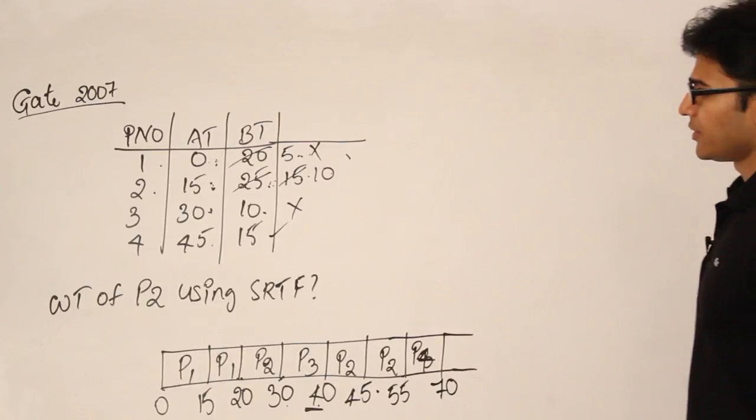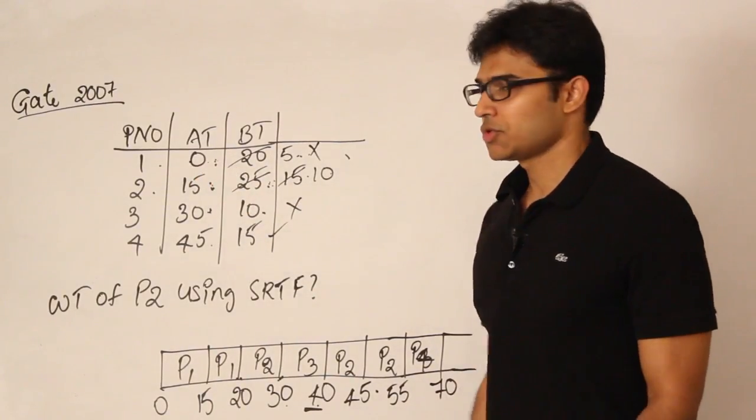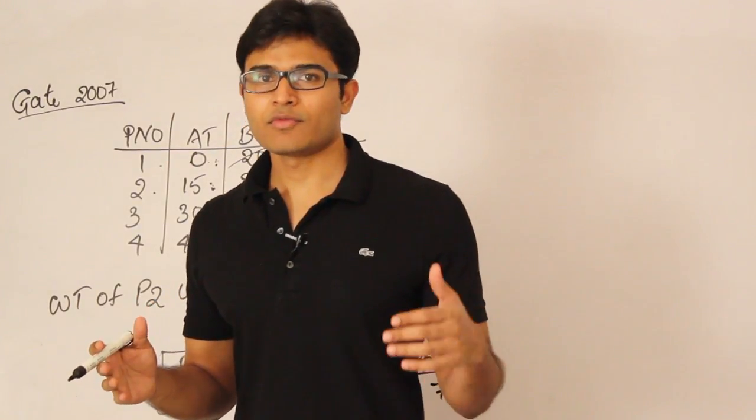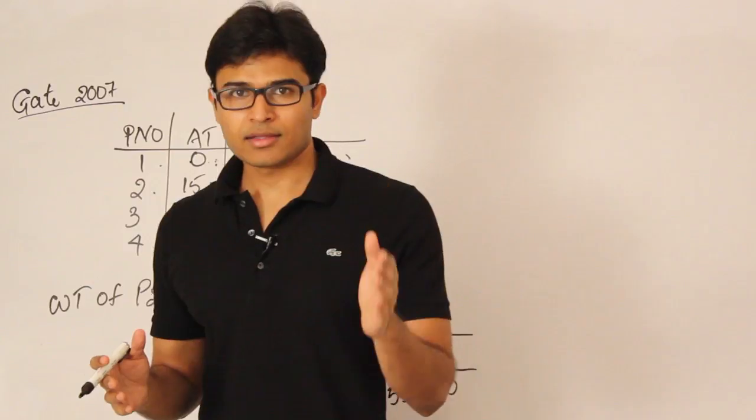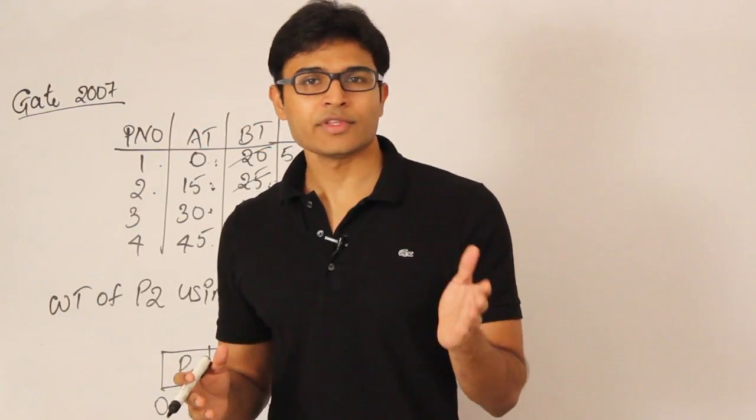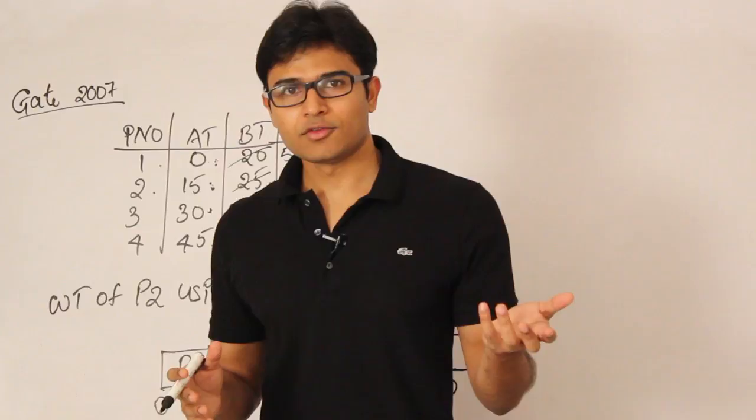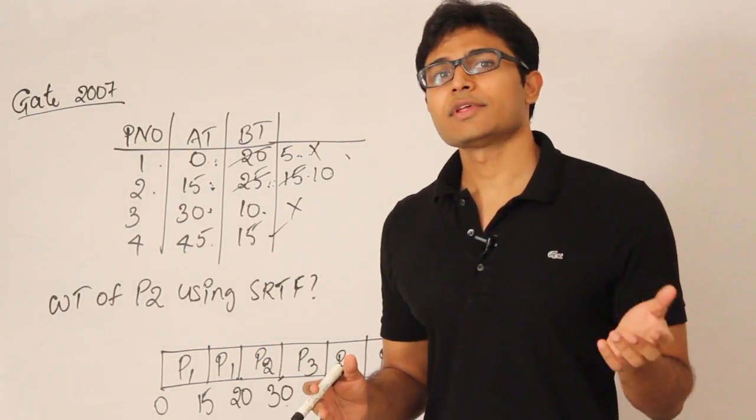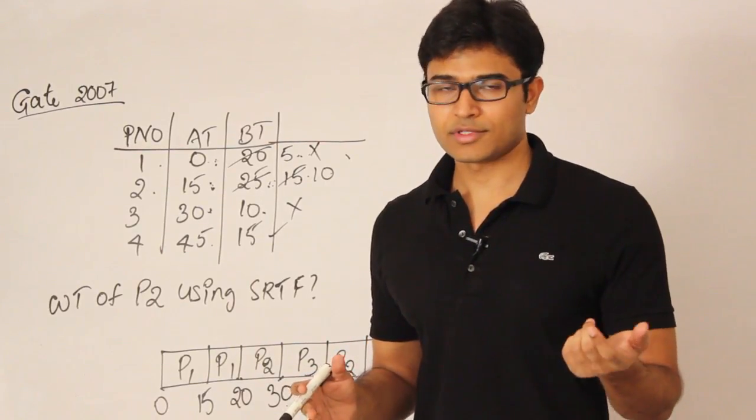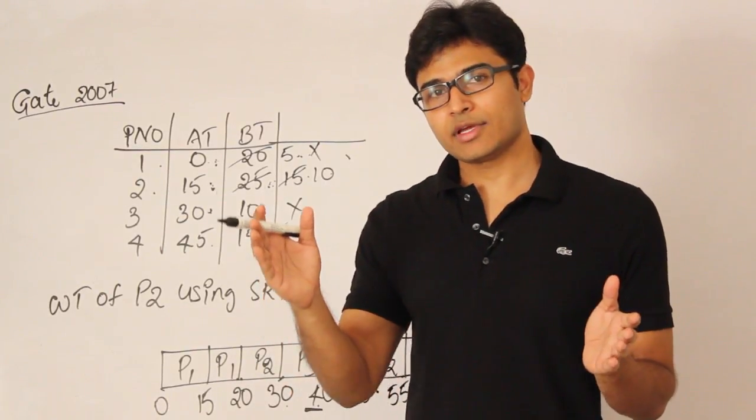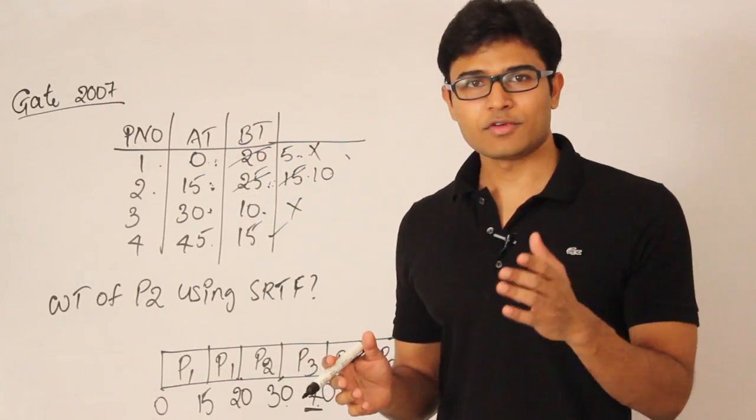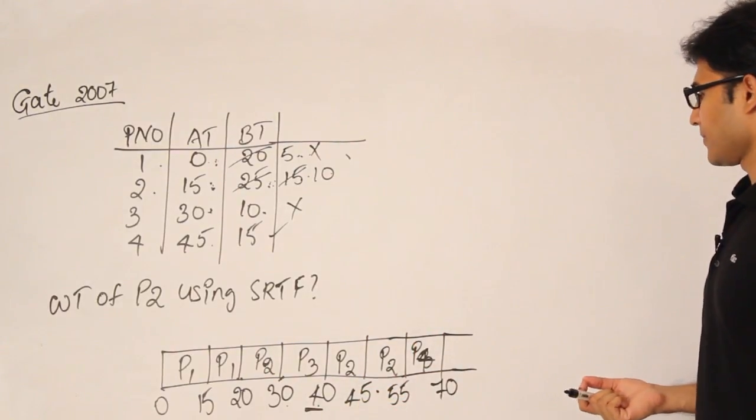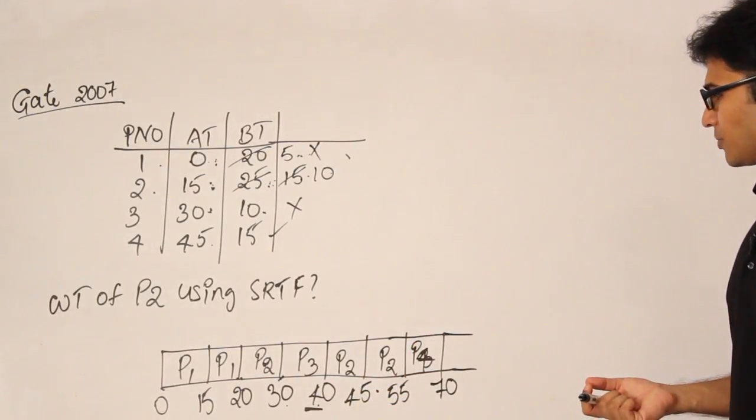So one thing you should observe here is whenever you choose one process to run it, either you go till the completion or you stop at the arrival time of the next process. And at that point you can stop and see whether the next process is having less burst time. In case if it is having less BT schedule it. Otherwise continue with the present process. And again run it till the arrival time of the next process. So don't stop it for every one unit. Otherwise it is going to become very big. Just be careful there. That is all, it should be intuitive for you.